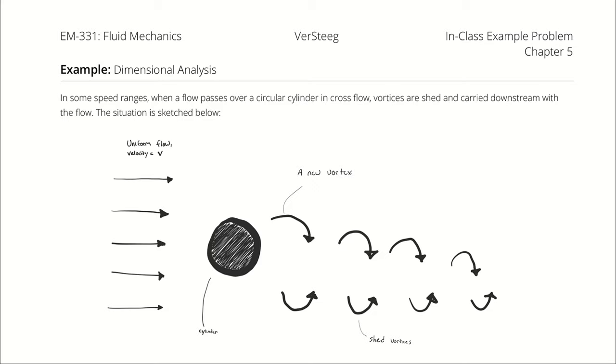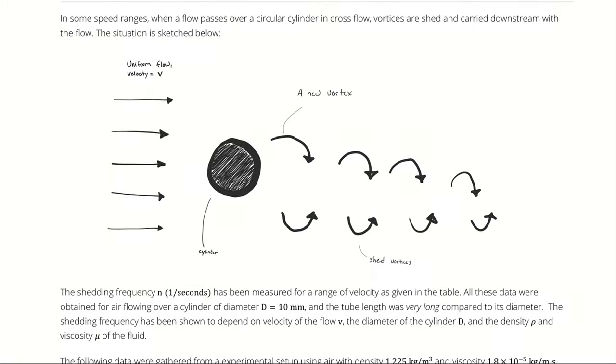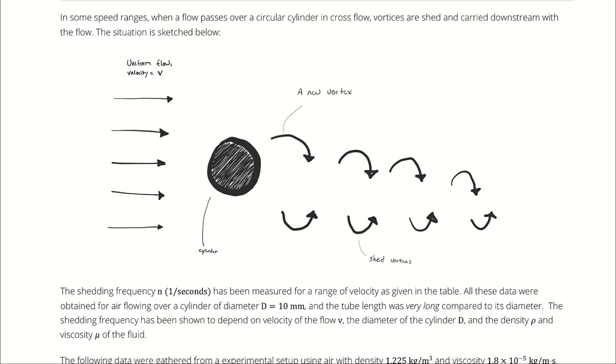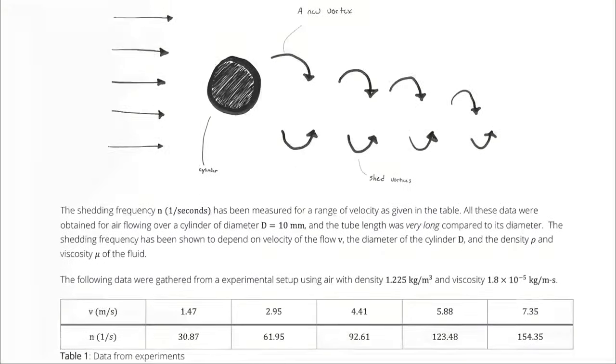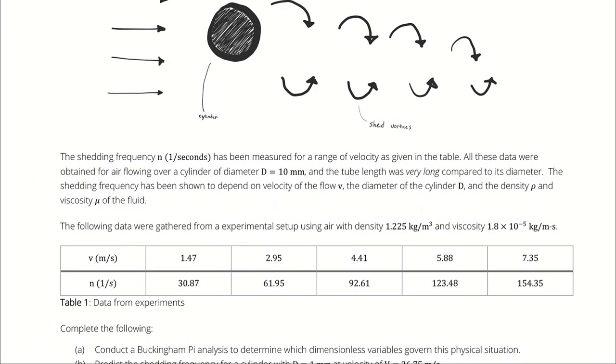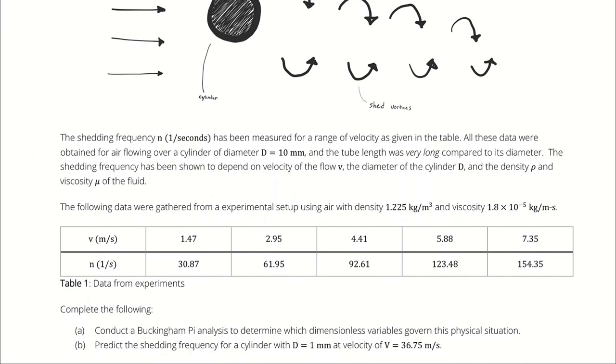In some speed ranges, when a flow passes over a cylinder in cross-flow, vortices are shed and carried downstream with the flow. The situation is sketched below. We have a uniform flow coming in from the left with a velocity of v. There's a cylinder shedding vortices.